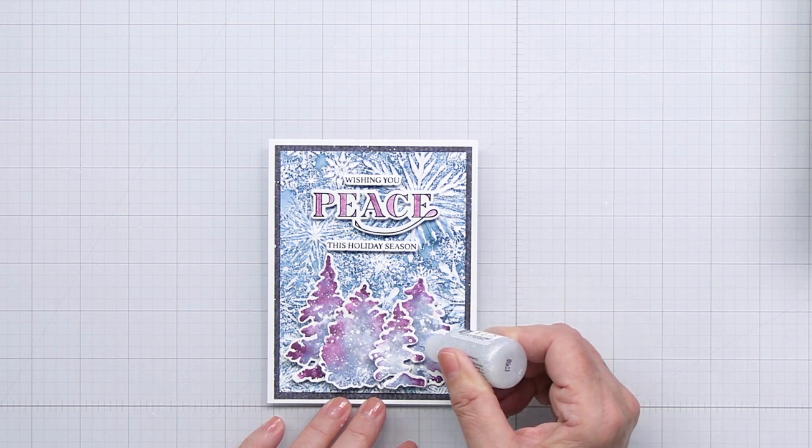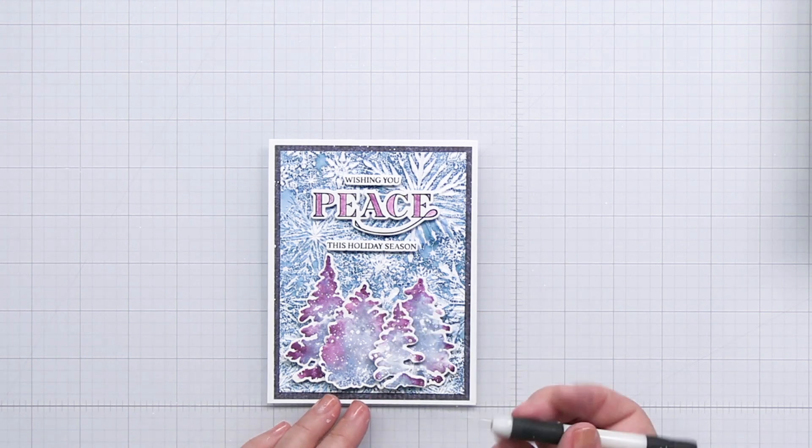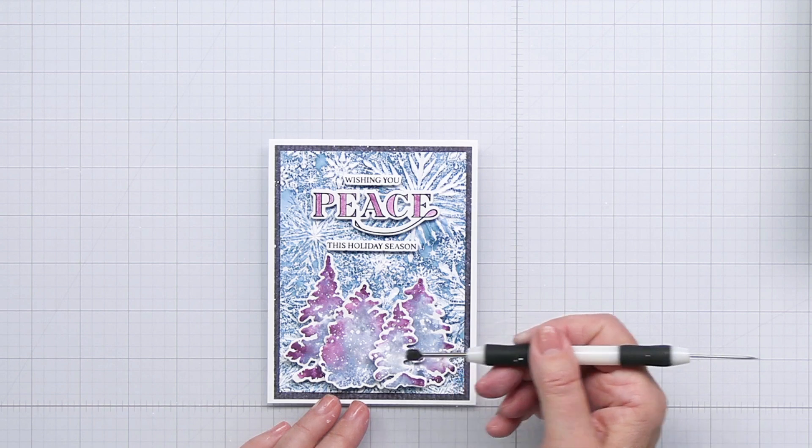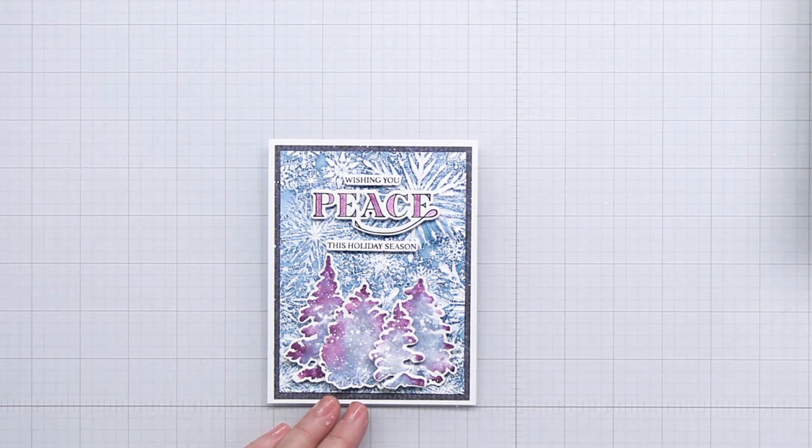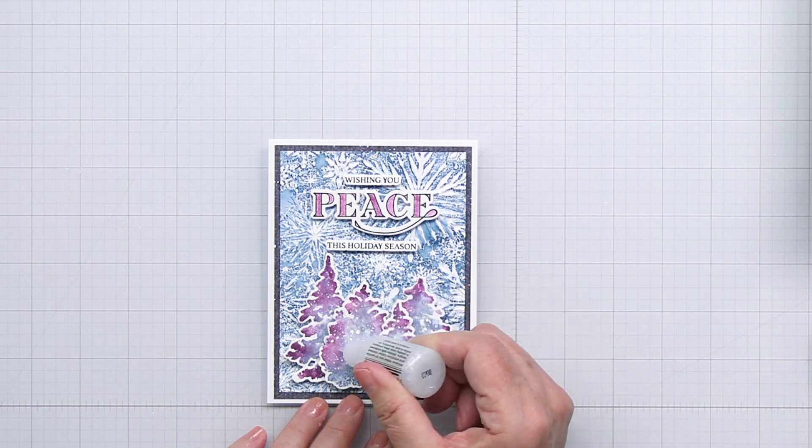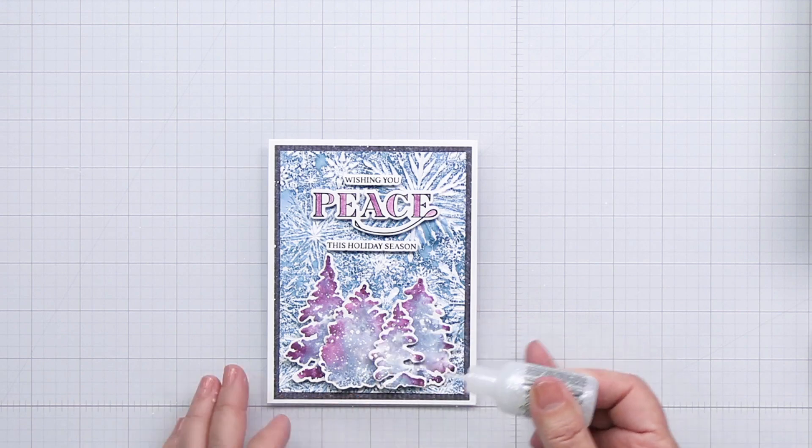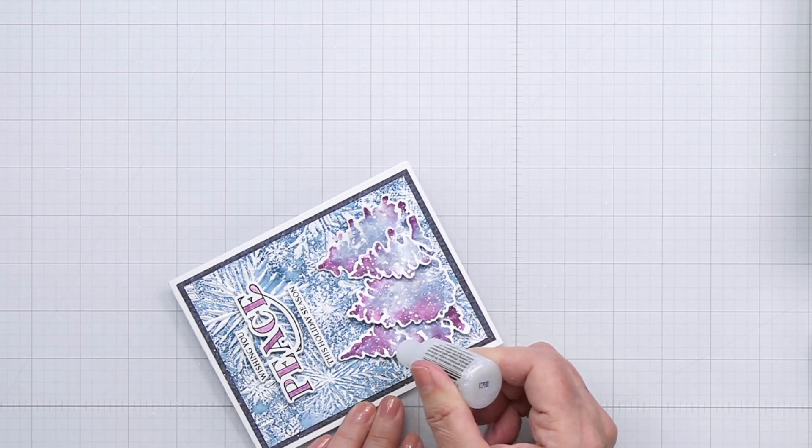Now that that's dry, I'm taking some stickles. This is just a really pretty kind of almost a clear with a little bit of an iridescent sparkle—these are the stardust stickles. I'm just adding a little bit of sparkle and shine to the trees in a few areas, and then I'll also add a little bit of those stickles to the peace sentiment here and there as well.